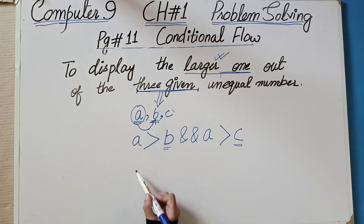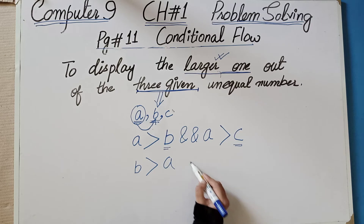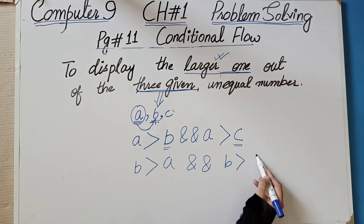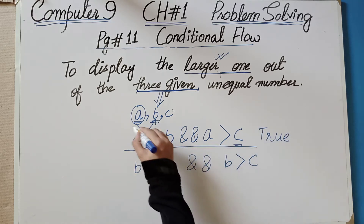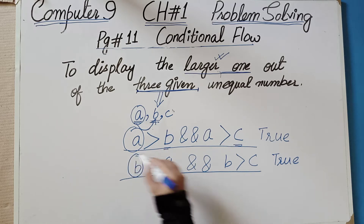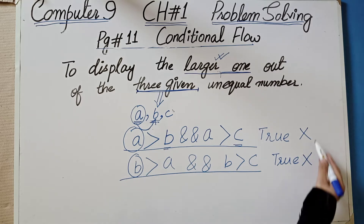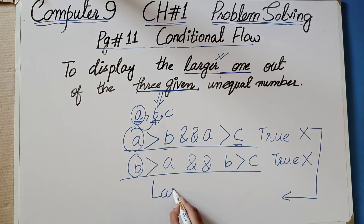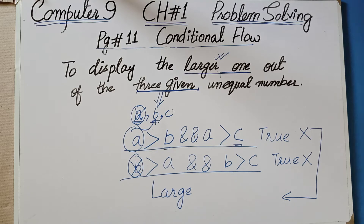Second, we suppose that B is greater than A, and B is also greater than C — then B is the largest number. If both conditions are false — meaning neither A nor B is the largest — then obviously the largest number will be C.